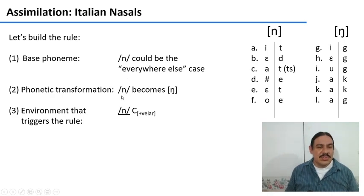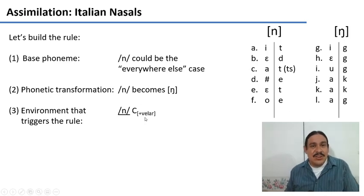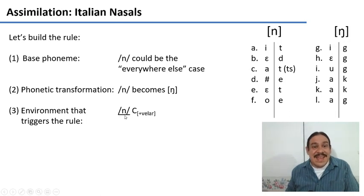So we're going to choose the alveolar one as the base phoneme. And then we're going to propose a transformation from alveolar to velar. And when is this going to happen? What is the environment that's going to trigger it? Whenever you see an n and then right after it you see a velar consonant as in tingo or tengo.